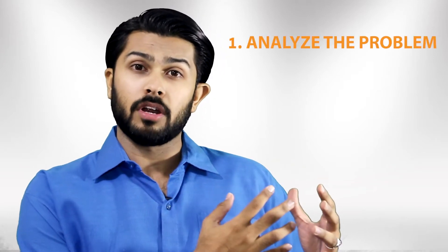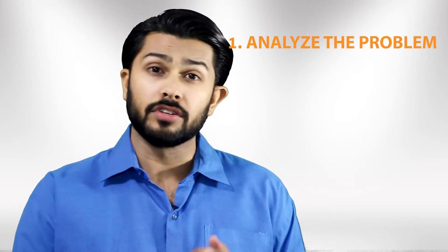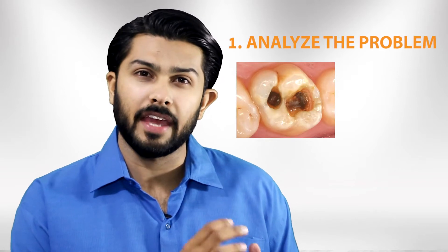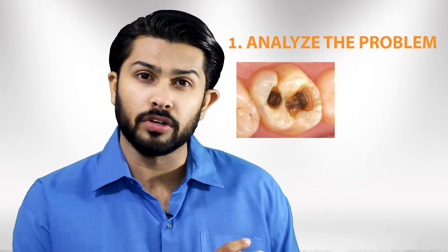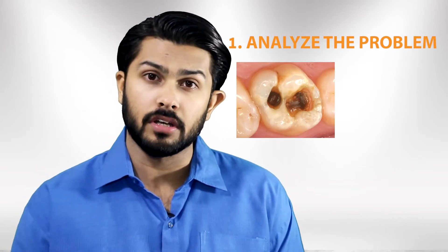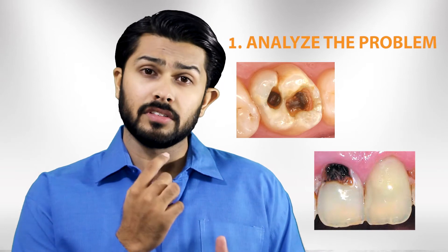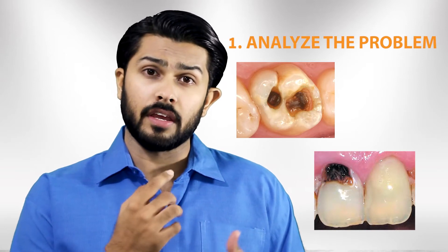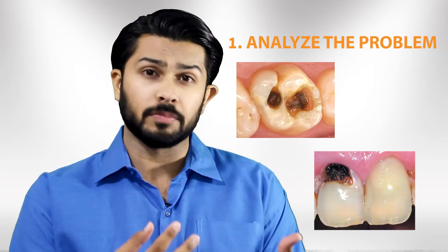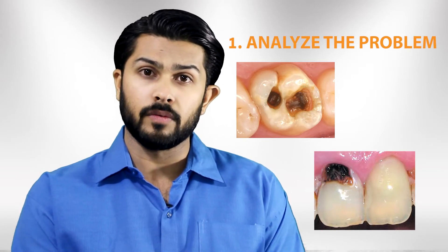The first step is to analyze the problem — as in, what the actual problem is. Either it's a large black cavity on a molar that makes it hard to function, or it's a carious central incisor that just looks bad from the aesthetic point of view.